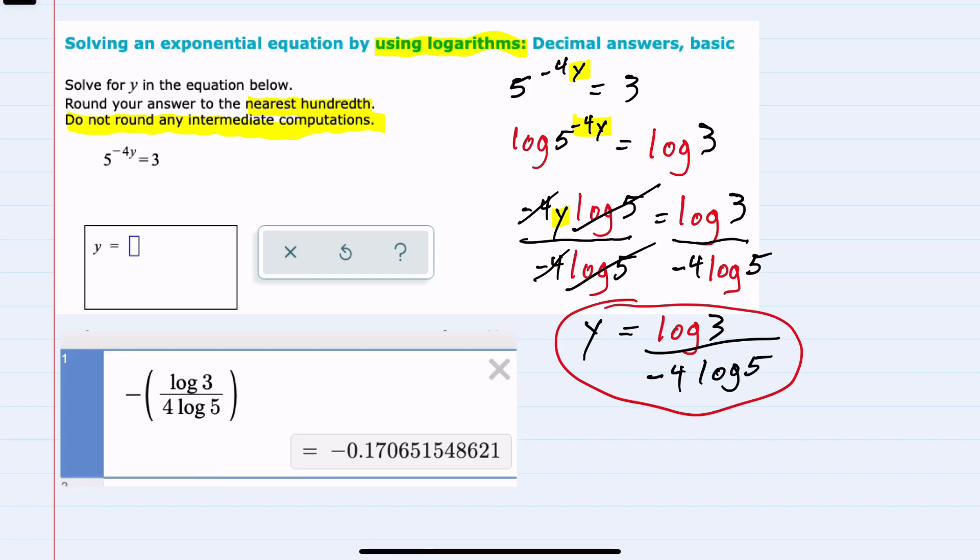So here I just plugged into Desmos. Looking at the hundredth place, I see that we have a zero behind that decimal place, so we will not round up. Our decimal approximation for y is negative 0.17, rounded to the nearest hundredth.